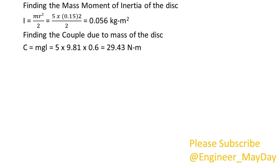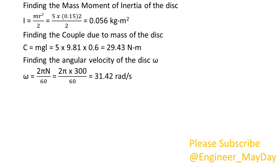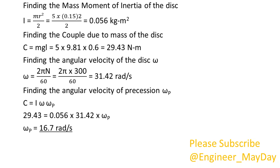Finding the couple due to mass of the disc: C equals 29.43 Nm. Finding the angular velocity of the disc omega: omega equals 31.42 radians per second. Finding the angular velocity of precession omega p: omega p equals 16.7 radians per second.